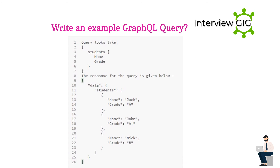Write an example GraphQL query. The query looks like: students { name, grade }. The response for the query is: data { students [ { name: Jack, grade: A }, { name: John, grade: A }, { name: Nick, grade: B } ] }.